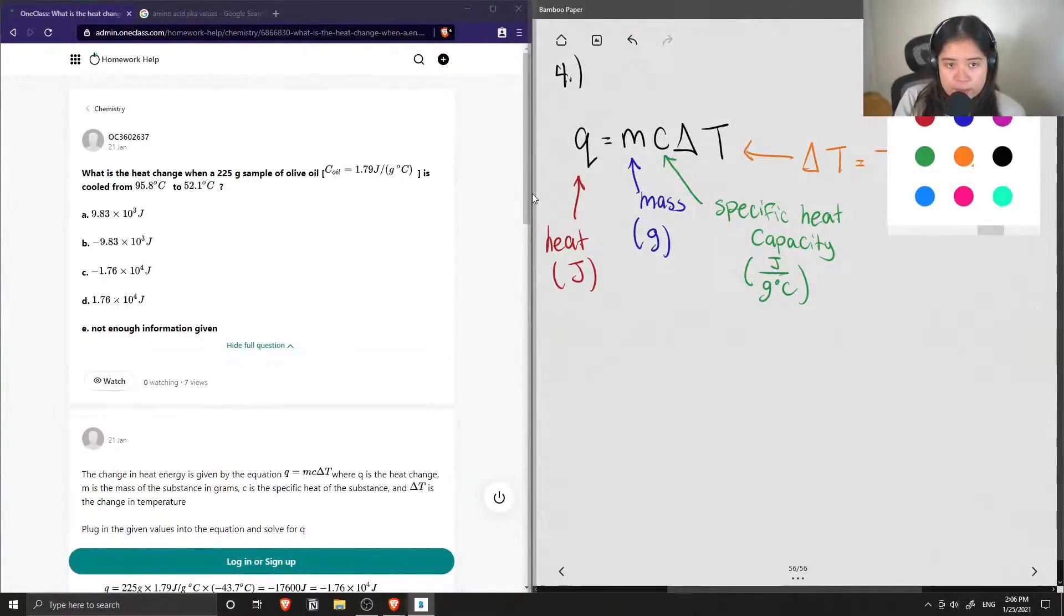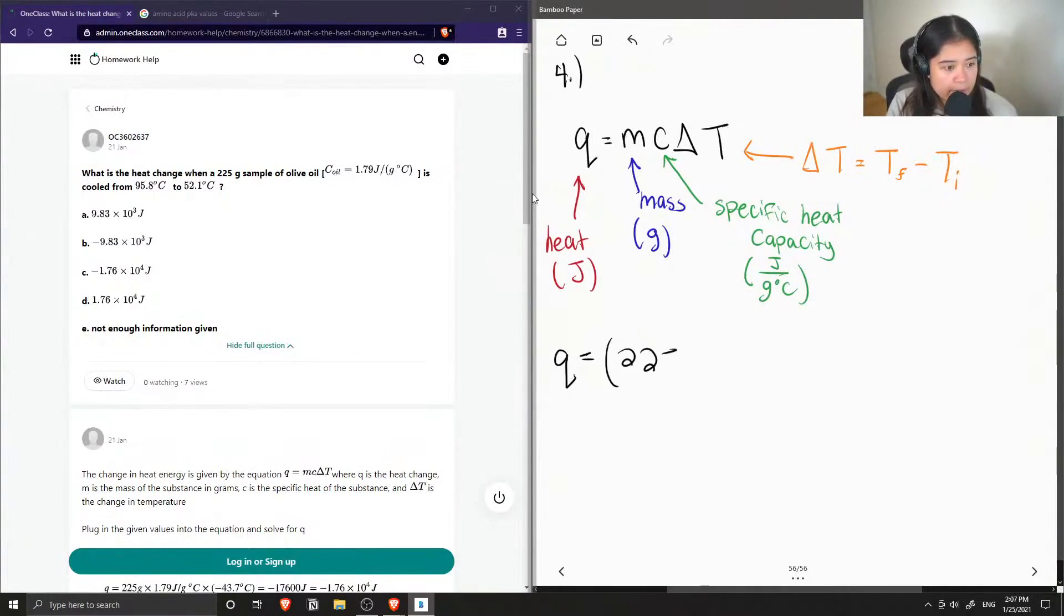Okay, so now that we have our formula, we can just plug in everything that we know. So we're trying to solve for Q, and we're given the mass of olive oil which is 225 grams.